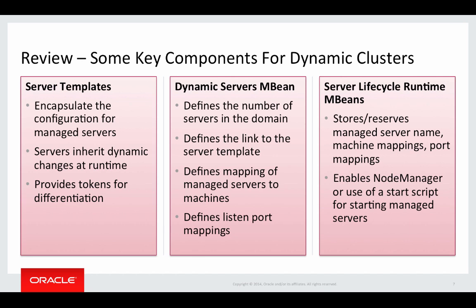There's also a dynamic servers MBean. This is a child of the cluster MBean. This MBean defines the number of servers in the domain, defines a link to the server template, defines the mapping of managed servers to machines, and also defines listen port mapping if you've enabled that. Lastly, there are server lifecycle runtime MBeans. These MBeans store or reserve the managed server name, the machine mappings, and the port mappings defined by configuration in the dynamic servers MBean. These server lifecycle runtime MBeans give you something to work with when you want to start a server, so node manager can call into them to gather information to start a server. When you use a start script, these server lifecycle runtime MBeans have already reserved things and defined server names, which are necessary for starting a server.